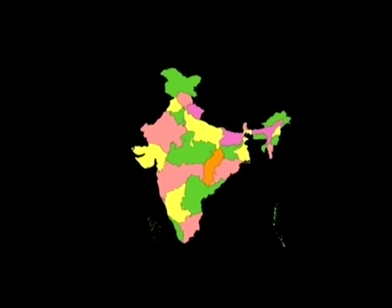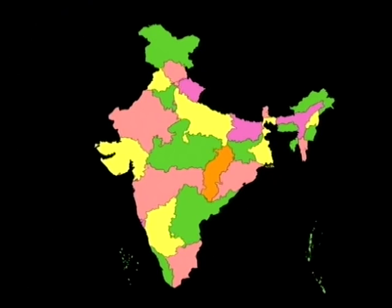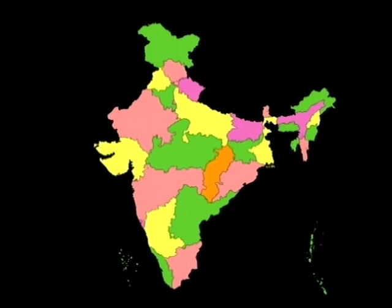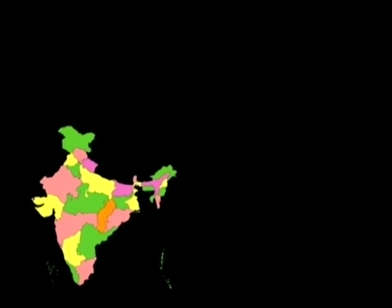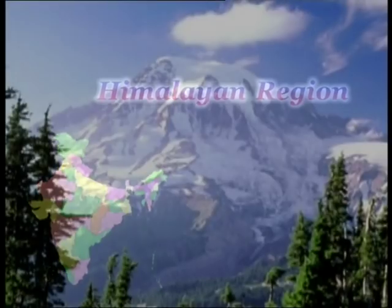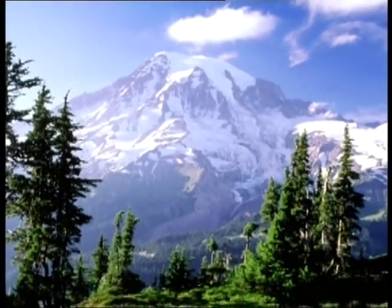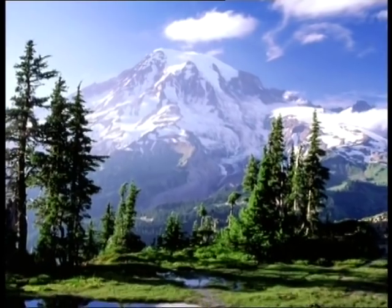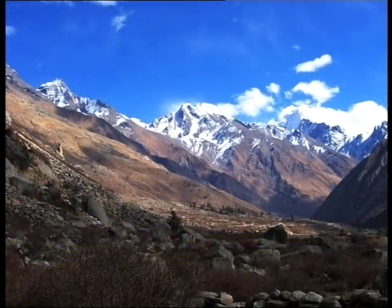Almost all parts of India experience one or more of the above mentioned disasters. Based on the frequency and vulnerability, the entire country may be classified into three regions. The first is the Himalayan region, which covers an area of about 500,000 square kilometers and is prone mainly to earthquakes, landslides, avalanche and bush fires.